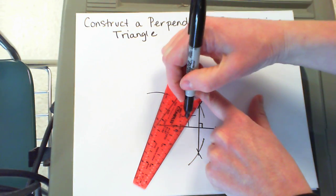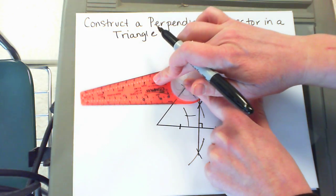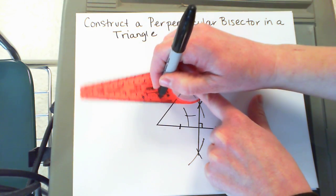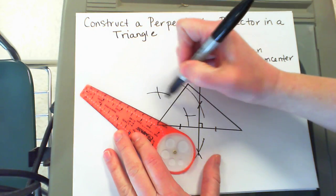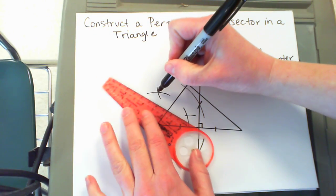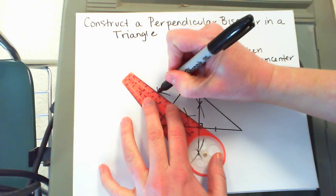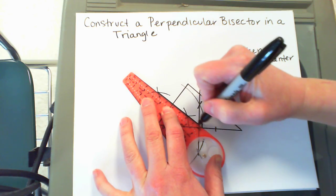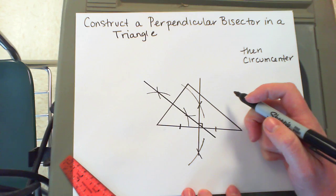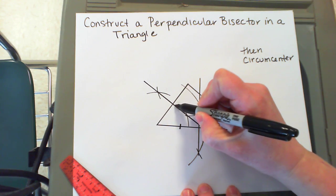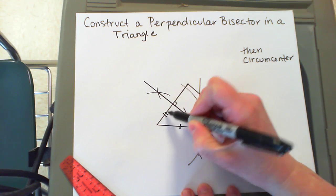You want the arc to intersect below and above. Again, you connect where those arcs intersected to draw your perpendicular bisector. I need to make a right angle marking and congruent markings.